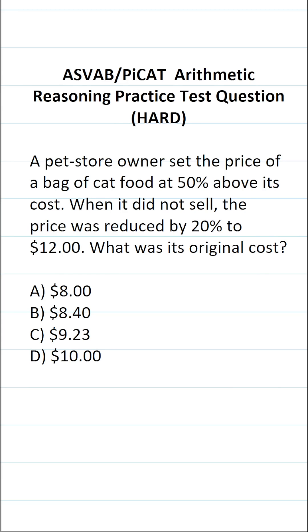This arithmetic reasoning practice test question for the ASVAB and PICAT says, a pet store owner set the price of a bag of cat food at 50% above its cost. When it did not sell, the price was reduced by 20% to $12. What was its original cost?